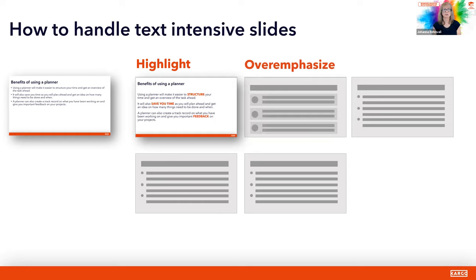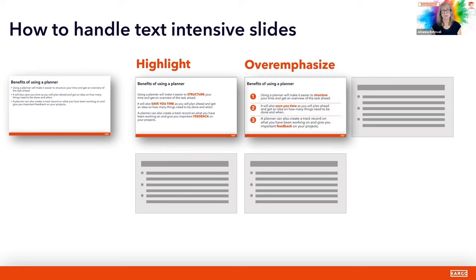The second strategy is to overemphasize. You have a lot of text — maybe you can work with that fact. For example, make dividers between the different pieces, add additional objects like numbers, add contrast, put alignment to work, and use repetition by using the same type of numbering and lines. So overemphasizing can also be something you do to that original bulleted slide.